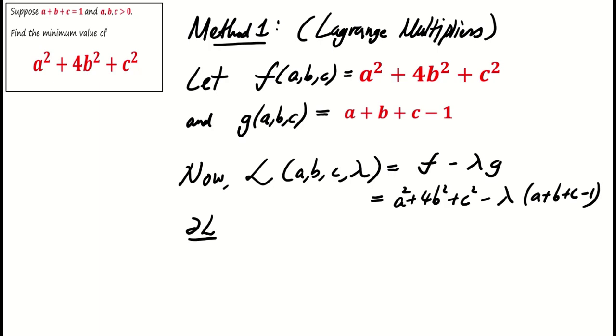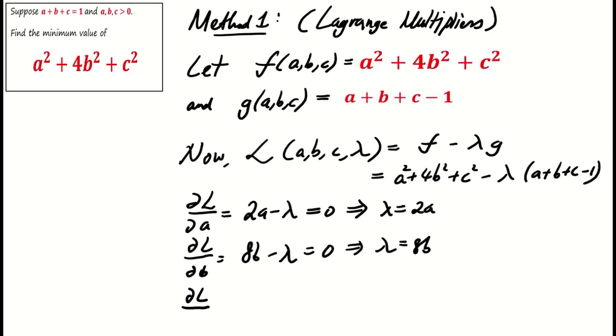Setting the partial derivative with respect to a, del L del a equals 2a minus lambda equals 0 implies lambda equals 2a. Similarly, performing partial derivative with respect to b and c, we obtain lambda equals 8b and lambda equals 2c, respectively.